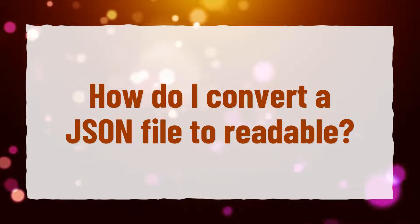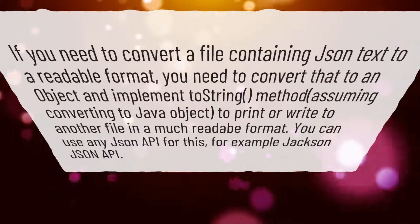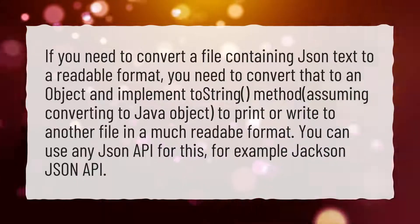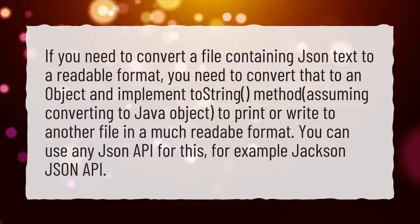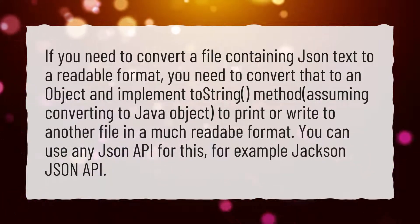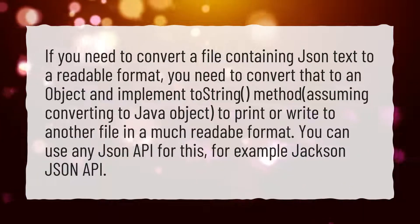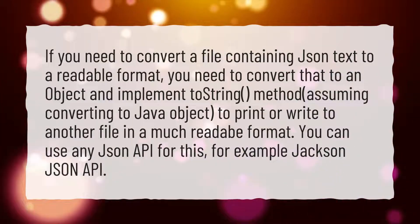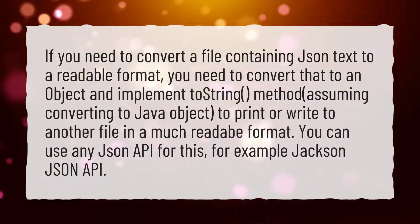How do I convert a JSON file to a readable format? If you need to convert a file containing JSON text to a readable format, you need to convert that to an object and implement the toString method, assuming converting to a Java object, to print or write to another file in a much more readable format. You can use any JSON API for this, for example the Jackson JSON API.